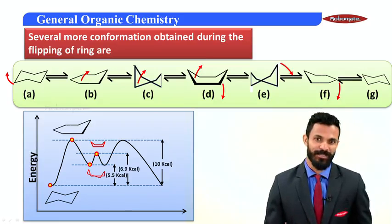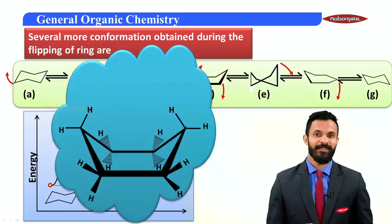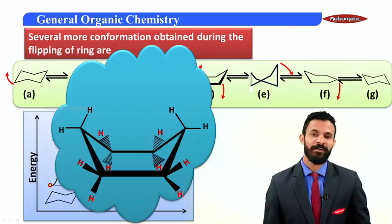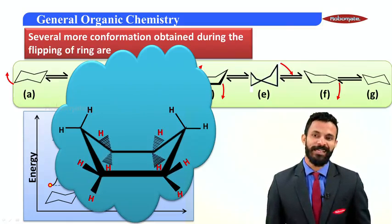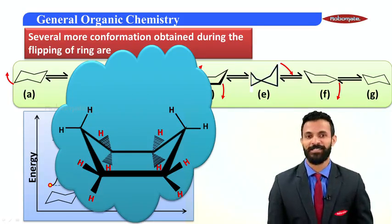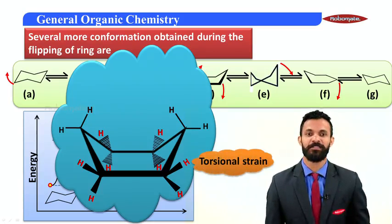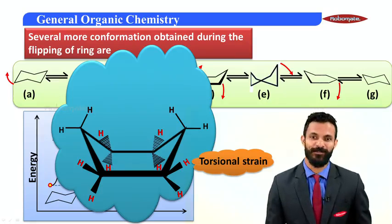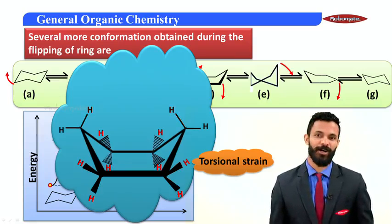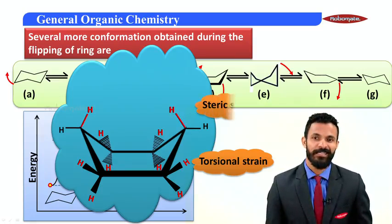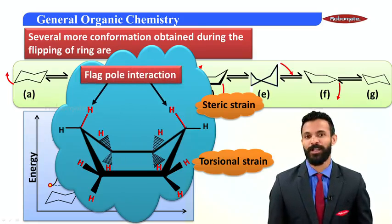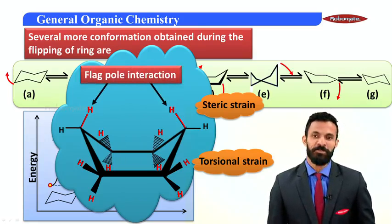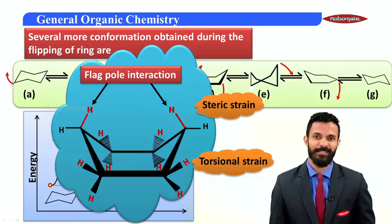Why is there such a large energy difference between the chair and the boat? In the boat conformation, these eight highlighted hydrogen atoms come exactly behind each other when observed in a Newman projection, meaning the eclipsing of these bonds causes torsional strain. Not only that, these two flagpole hydrogens point towards each other, creating steric strain — this is called flagpole interaction.